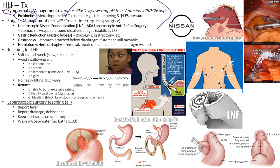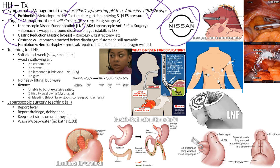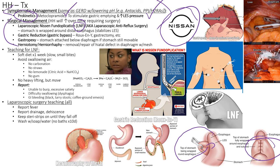Surgical management includes laparoscopic Nissen fundoplication (LNF) — the fundus of the stomach is wrapped around the lower esophagus and stapled in place, creating a tight seal that makes herniation more difficult. It's done laparoscopically through several small holes with CO2 insufflation. Gastric reduction — partial gastrectomy with bypass to the duodenum or jejunum (Roux-en-Y) — can be done when there is significant ulceration or damage.